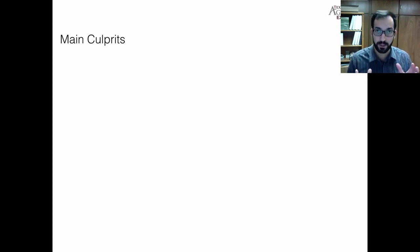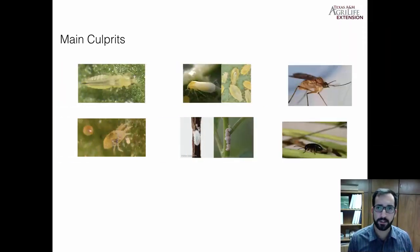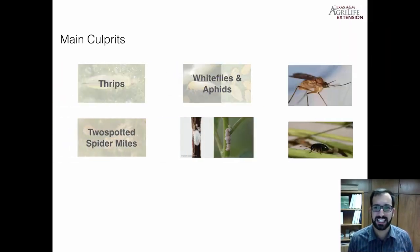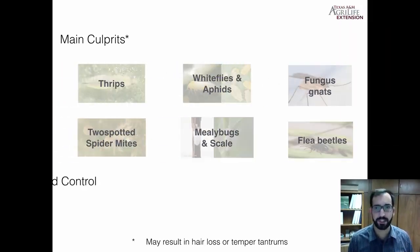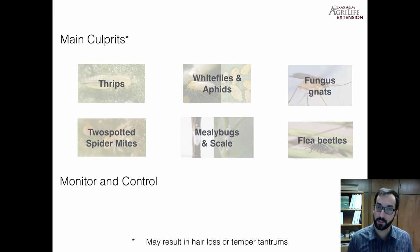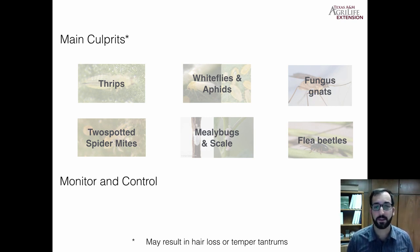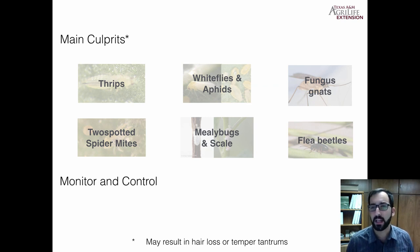So the main culprits we're going to talk about today are these six general categories or groups: thrips, whiteflies and aphids, fungus gnats, two-spotted spider mites, mealybugs and scale, and flea beetles.